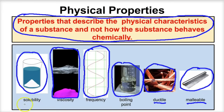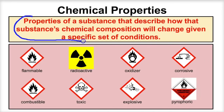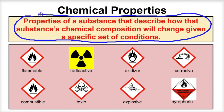Let's take a look now at chemical properties. Chemical properties are a little different. Chemical properties are properties of a substance that describe how that substance's chemical composition will change given a certain specific set of conditions.